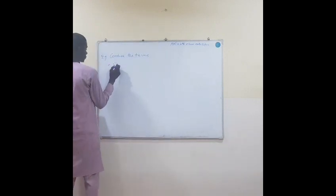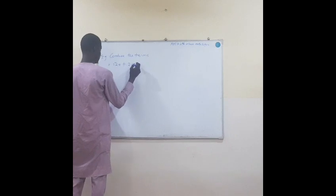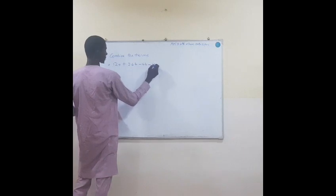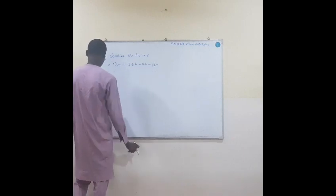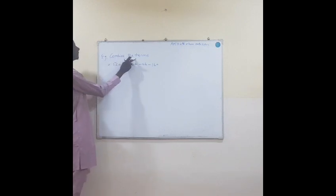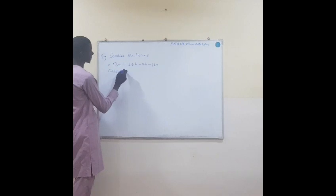And then 4A plus 26B minus 4B minus 16A. So whenever you see the terms, so whenever you see the phrase combine the terms, it clearly tells you to collect like terms.